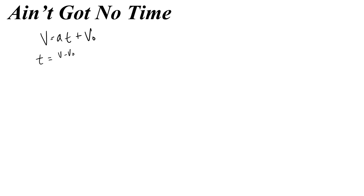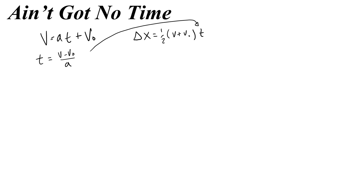Let's review what we just did. We started with the velocity equation: v equals at plus v-naught. Then we solved for time: t equals v minus v-naught over a. Then we used the position equation delta x equals average velocity, which is half of v plus v-naught, times t. Now I'm going to take the expression for time and plug it in: delta x equals one-half times v plus v-naught times v minus v-naught all over a.